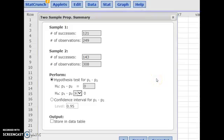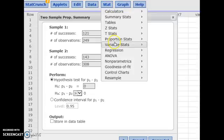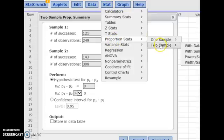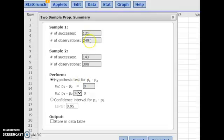I'm going to use StatCrunch to solve this rather than Excel because StatCrunch has a great built-in tool for problems like this. If you go to Stat, Proportion Stats, two samples with Summary, it'll open up this screen. You just type in your sample information and then we're doing a hypothesis test.